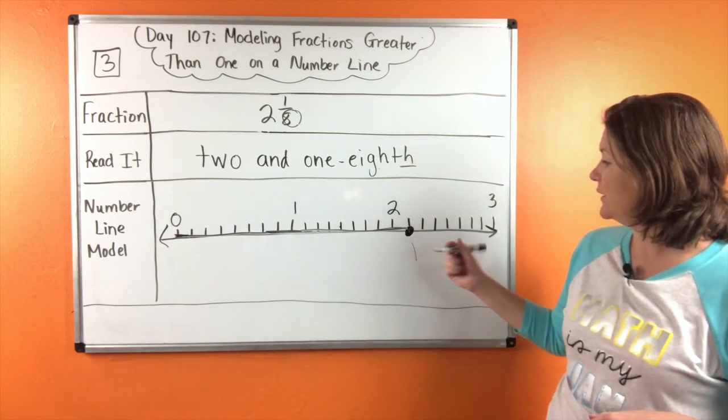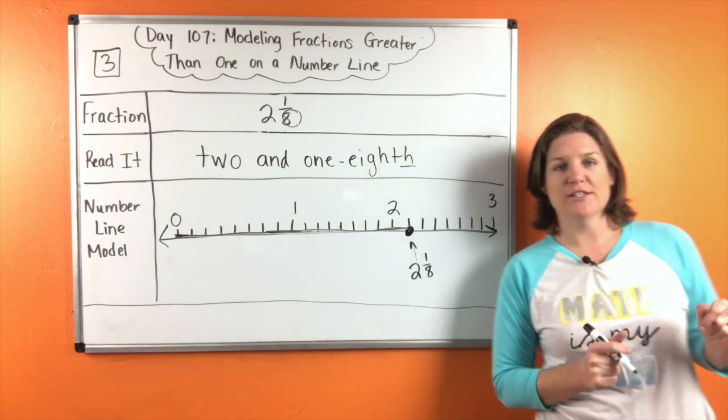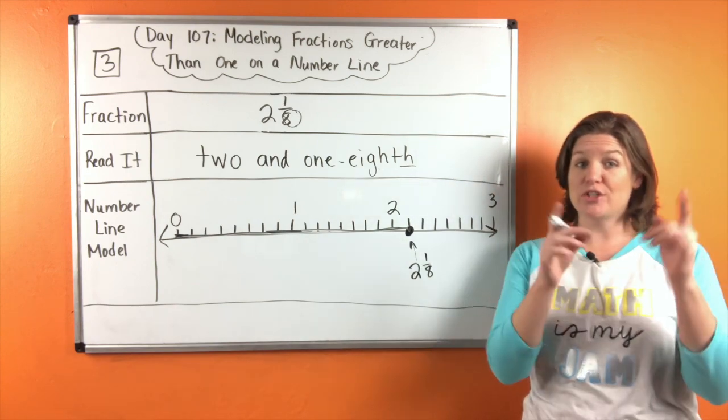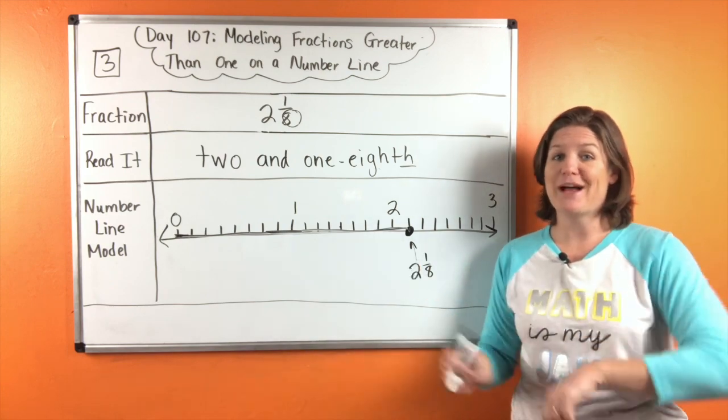Okay. So this right here would be two and one eighth. Awesome. Okay. Make any corrections that you need to make and then try the last one number four on your own and come back to check your work.